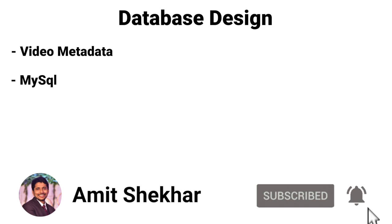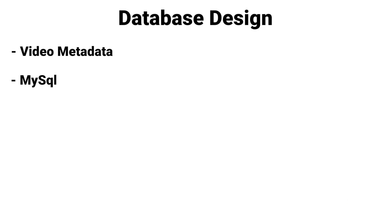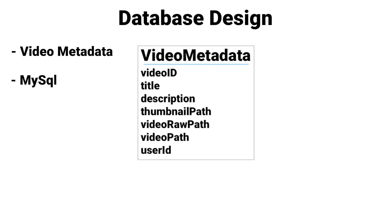Let's talk about the database design. For this video upload service we only have video metadata to store, and we can go with a MySQL database. The video metadata table will include: video ID, title, description, thumbnail path (where the thumbnail is hosted), video raw path (where the encoded video is hosted), and user ID (who uploaded the video). Similarly, we can design the user table with fields like user ID, name, email, and so on.